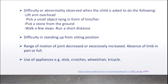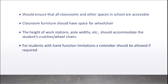Other signals include decreased or excessively increased range of motion of joints, absence of a limb in part or full, and the use of appliances like a stick, crutches, wheelchair, or tricycle. All of these imply to a teacher that the child may have some kind of locomotor impairment.